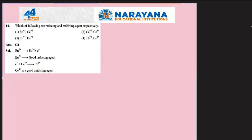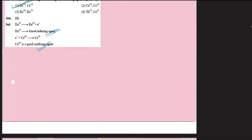Which of the following are reducing and oxidizing agents respectively? These are lanthanides whose common oxidation state is +3. Europium Eu²⁺ tends to get oxidized to +3, so it is a good reducing agent. Cerium Ce⁴⁺ tends to get reduced, so it is a good oxidizing agent. The good reducing and oxidizing agents respectively are Eu²⁺ and Ce⁴⁺. The first option is the correct answer.